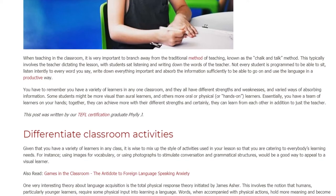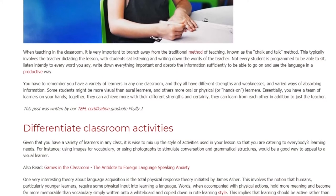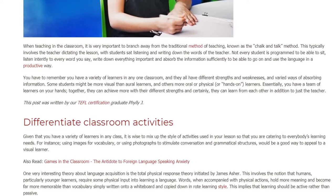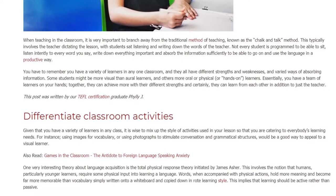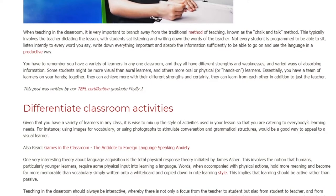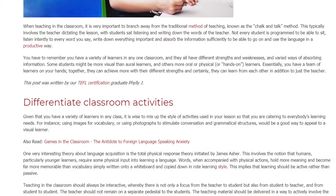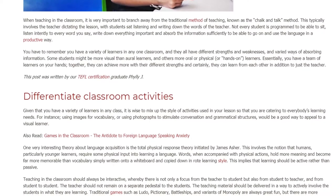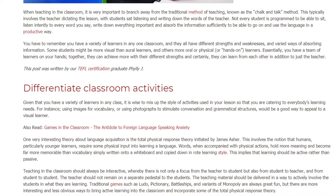Differentiate classroom activities. Given that you have a variety of learners in any class, it is wise to mix up the style of activities used in your lesson so that you are catering to everybody's learning needs. For instance, using images for vocabulary, or using photographs to stimulate conversation and grammatical structures, would be a good way to appeal to a visual learner.